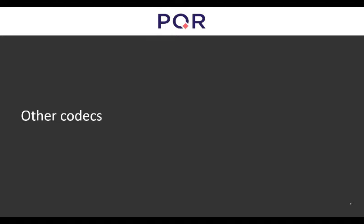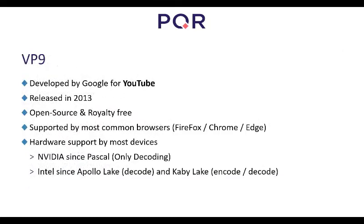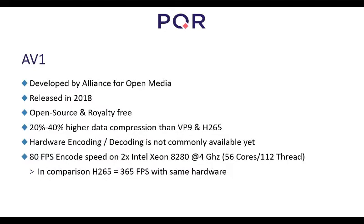There are some other codecs as well. H.265 was introduced for ultra HD and 4K because more compression was needed — it's built to reduce bit rate but uses eight times more CPU than H.264. VP9 was developed by Google: it's open source, royalty-free, supported by most devices, and mainly used on YouTube. AV1 was created by the Alliance for Open Media and was just released last year — it's also open source and royalty-free.